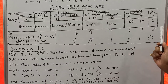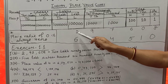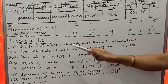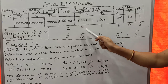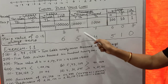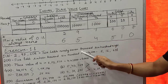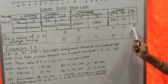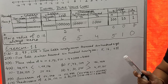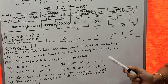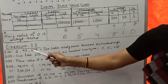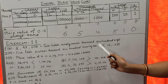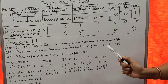2 is in the Lakh place, so this is 2 Lakh. 97 is in the thousands place, giving 97,608. Like this, you can do Exercise 1.1 for all numbers given and write them in number names.